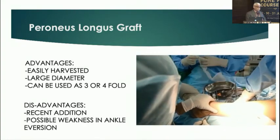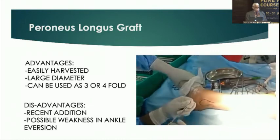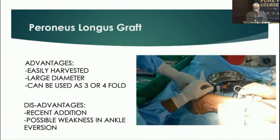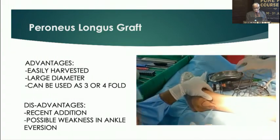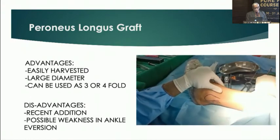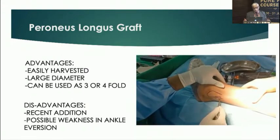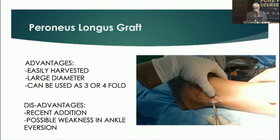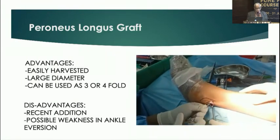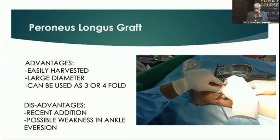The peroneus longus graft has been used for quite some time, though not as a primary graft. It is very useful in multi-ligament injuries — very easy to harvest, taking only about five minutes, with minimal donor-side morbidity. The only concern is possible weakness of some ankle movements, but that has not been experienced in practice over four to five years of use with good success.